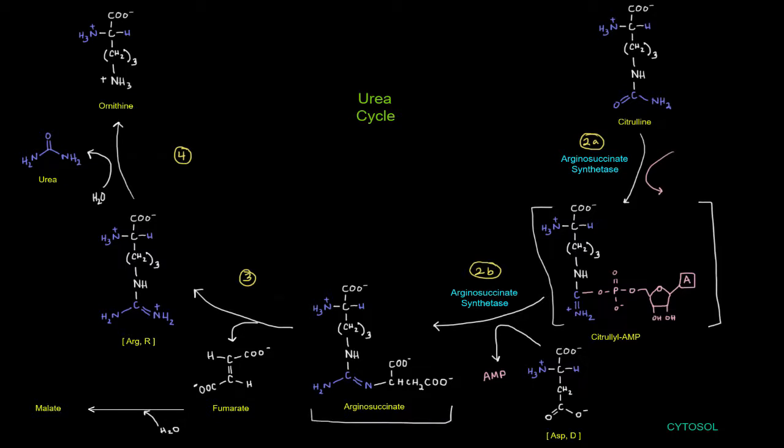And in part A of the reaction, we're going to add an ATP where the AMP portion ends up attached to the citrulline and the pyrophosphate falls off. So we get that AMP portion there attached to the citrulline to become the citrulline-AMP intermediate.